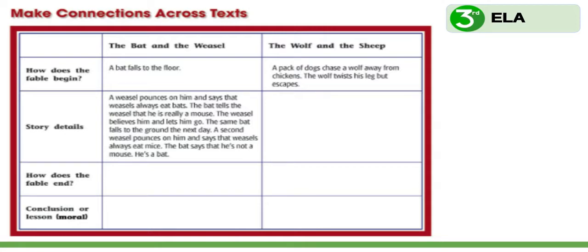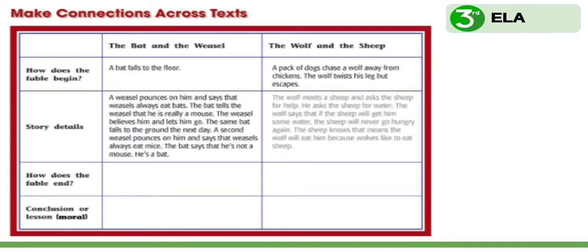Let's think about the story details from The Wolf and the Sheep. The wolf meets the sheep and asks the sheep for help — he asks for water. The wolf says that if the sheep will get him some water, the sheep will never go hungry again. But the sheep knows that means the wolf will eat him, because wolves like to eat sheep.